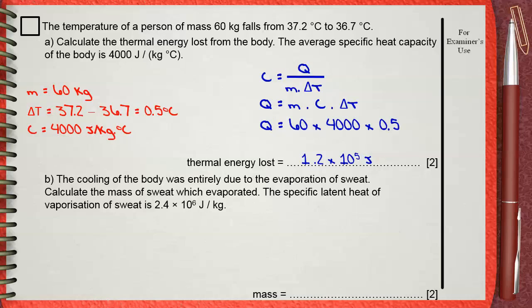So let's see the givens in this question. We have 2.4 times 10 power 6 joules per kilogram. This is the specific latent heat of vaporization of sweat, LV. You also have another given. You have the Q, which is the quantity of thermal energy or the quantity of heat energy. This is calculated from point A. And we said they are the same. The energy lost by the body to cool down and the energy gained by the sweat to evaporate.